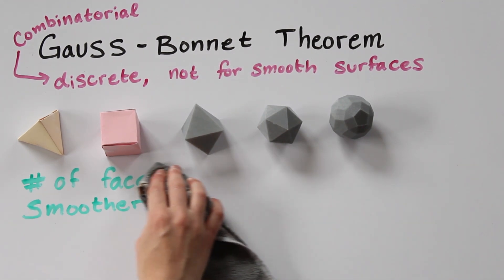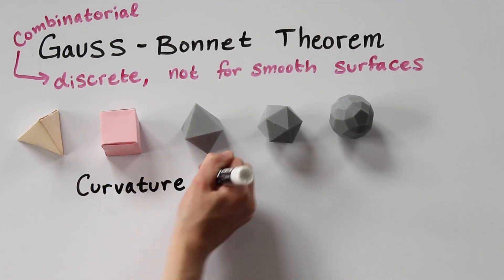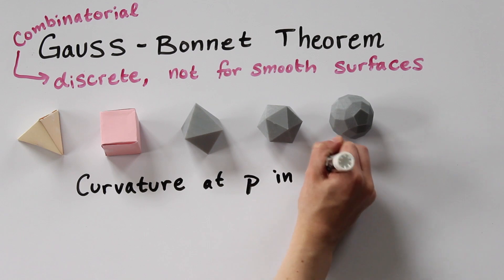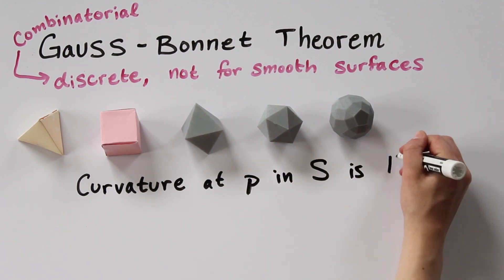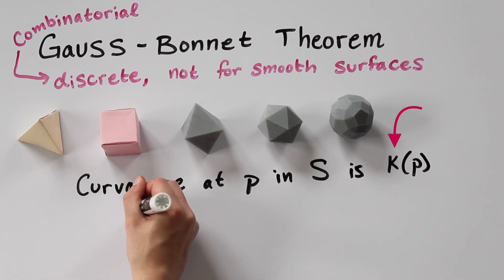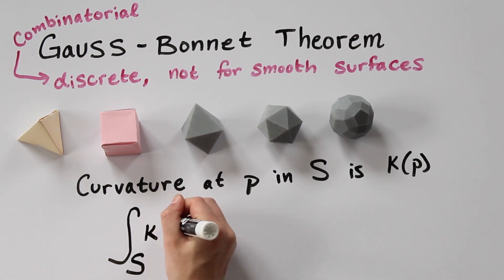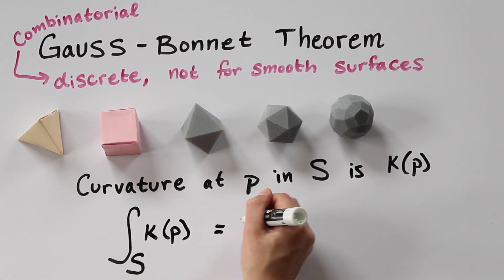In the limit, the angle deficiency becomes something called the curvature, which is a measure of how fast the surface curves away from the tangent plane. We notate curvature with the Greek letter kappa. So the classic Gauss-Bonnet theorem states that integrating the curvature over a surface S will give 2π times the Euler characteristic of the surface.